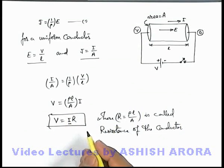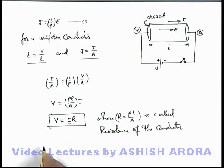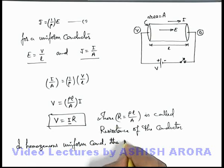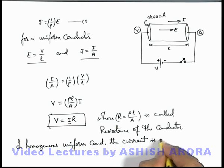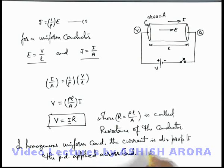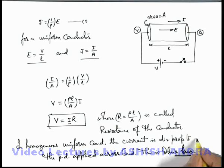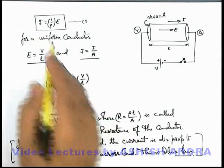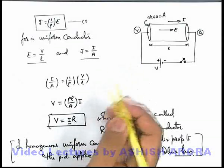Whenever a potential difference is applied across a conductor, a current I flows and the value of current is directly proportional to the potential difference applied. In homogeneous uniform conductors this is Ohm's Law: V = IR. You might have studied this relation in earlier classes, but it applies only for homogeneous uniform conductors. The differential form J = (1/ρ)E is more general and is applicable for any condition and any kind of conductor, whether it is homogeneous or non-homogeneous.